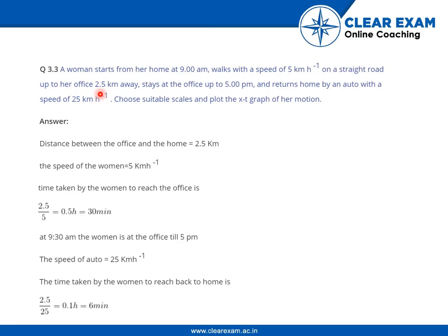So we can again find out the value of T, which is 2.5 divided by 25. She takes 6 minutes of time to reach back home from her office.